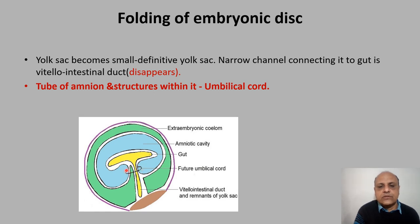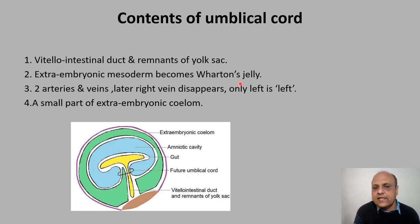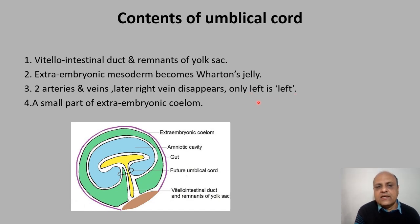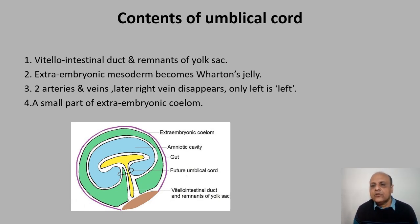The tube of amnion and the structures within it constitute the umbilical cord. The contents of the umbilical cord include the vitello-intestinal duct and remnants of the yolk sac, extra-embryonic mesoderm which becomes Wharton's jelly protecting the blood vessels, two umbilical arteries, and initially two veins — the right vein disappears leaving only the left umbilical vein — plus a small part of extra-embryonic coelom. At term, the umbilical cord is around 50 cm long and 2 cm in diameter.